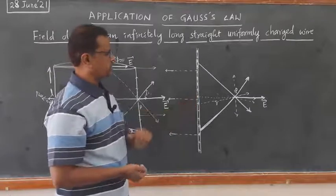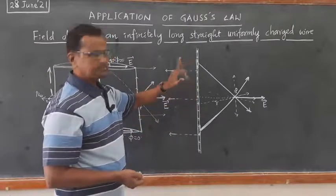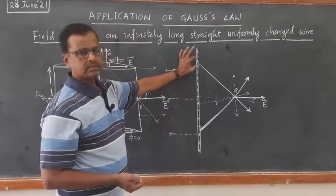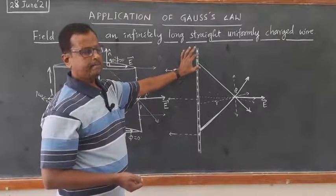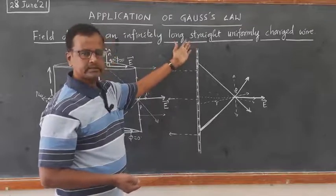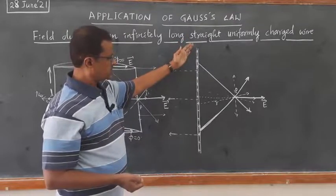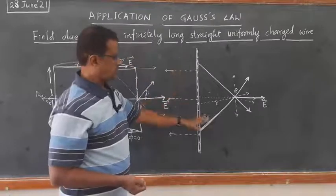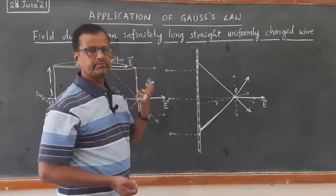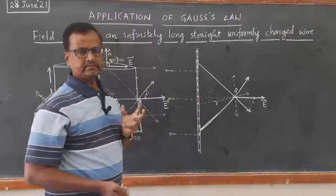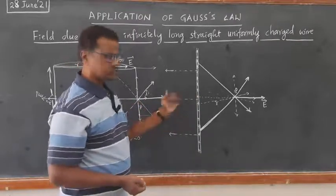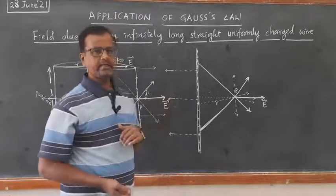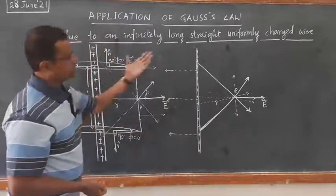If we do not apply Gauss's law, then we have to consider a small element of this wire, find the electric field due to that element, and then integrate the electric field due to all such elements from one end to another, from 0 to infinity. Using that integration method, we can get the result, but it takes a long time and the problem is also complicated. So it can be solved very easily by using Gauss's law.